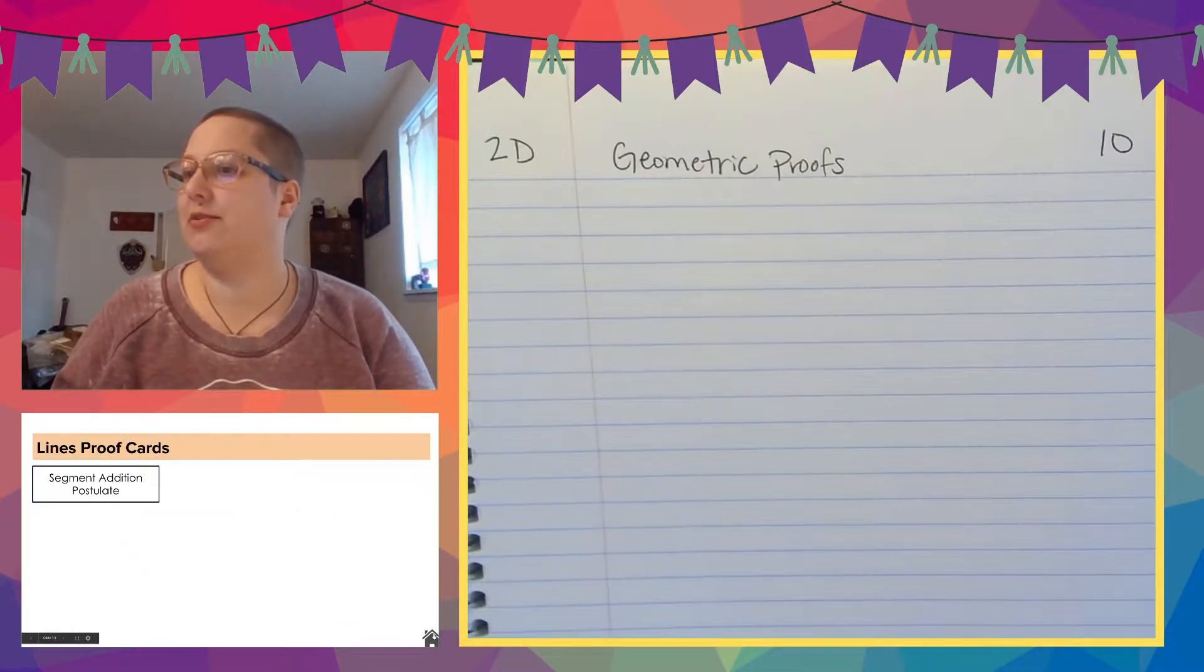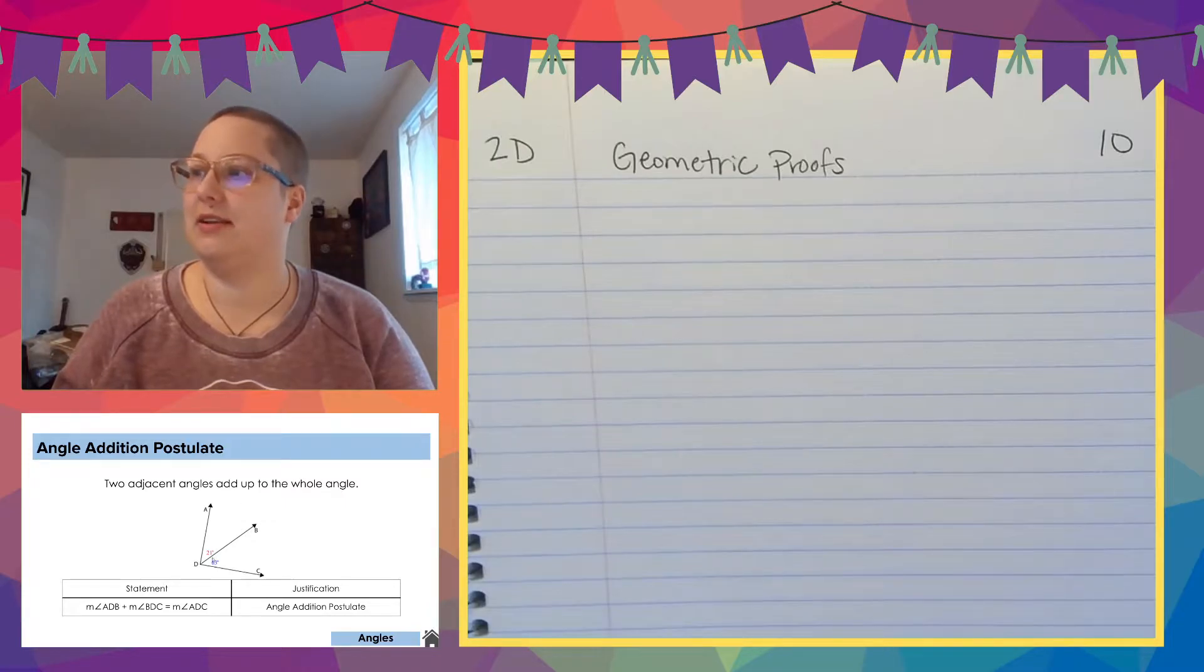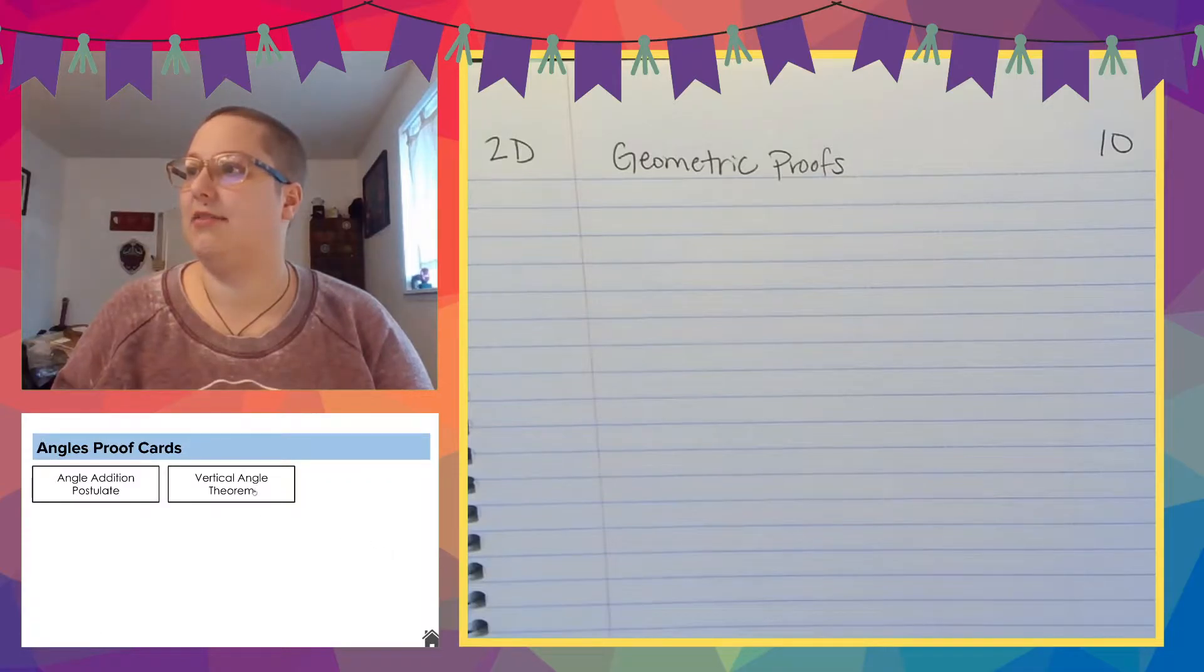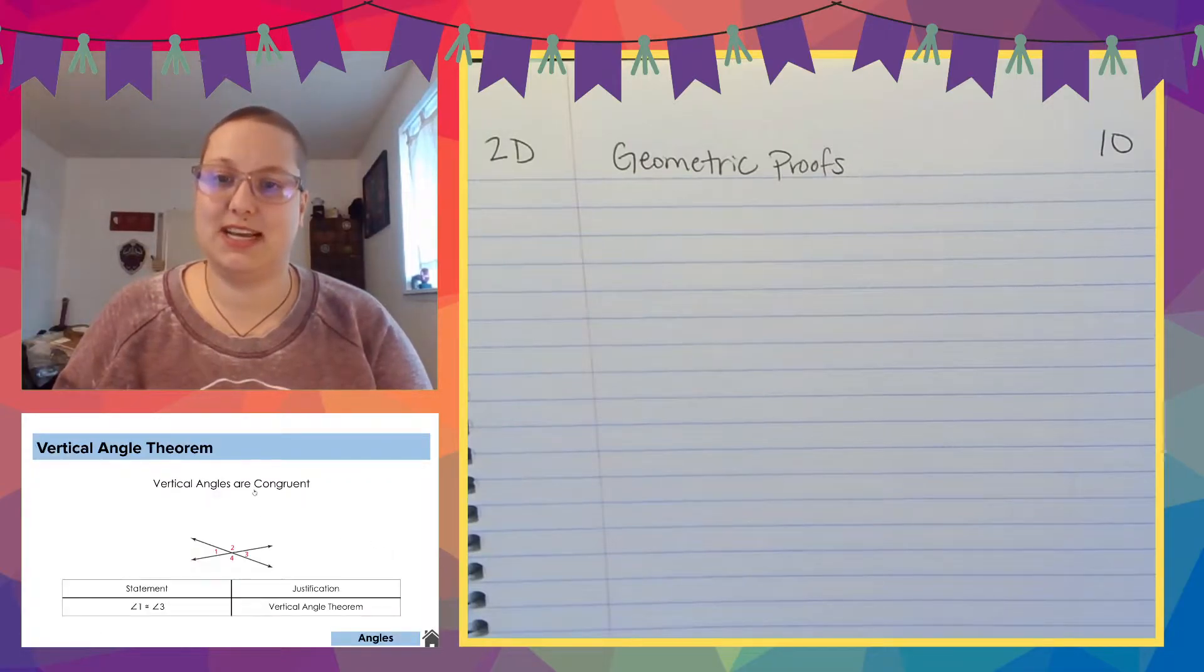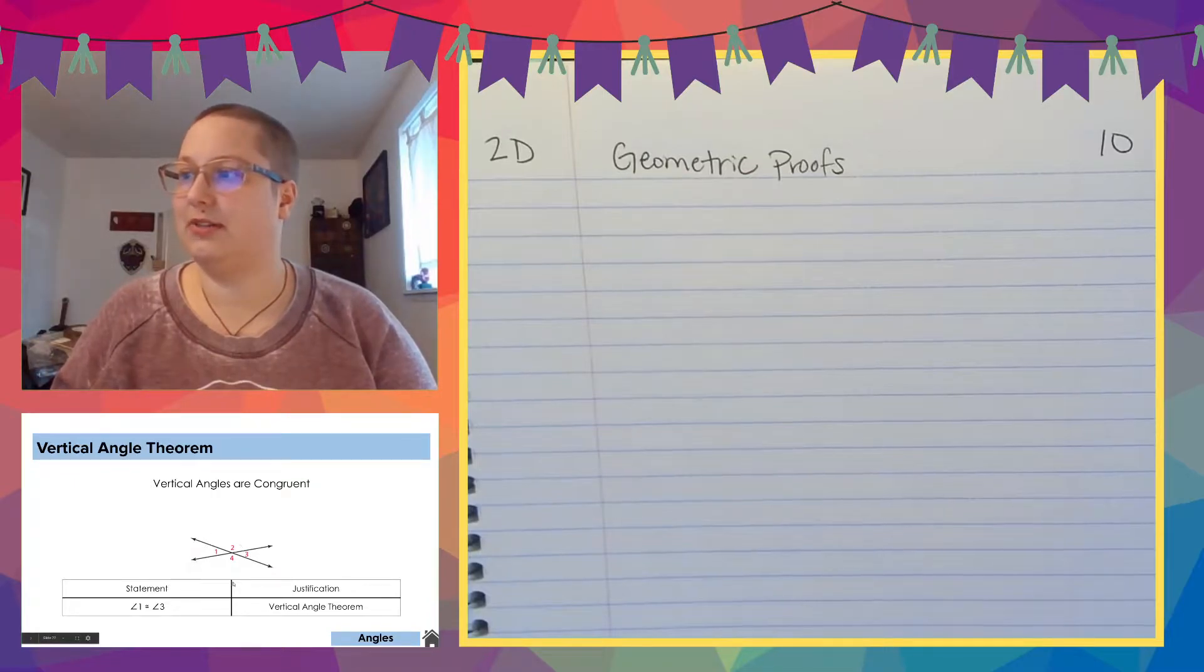I also give you angles. So I give you the angle addition postulate, which is that this angle plus this angle is the whole. And I give you the vertical angle theorem, which is that two vertical angles are congruent. They're the same. So one is equal to three and two is equal to four.